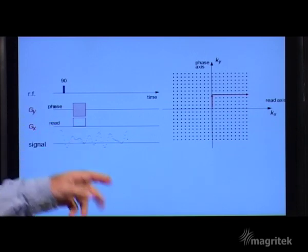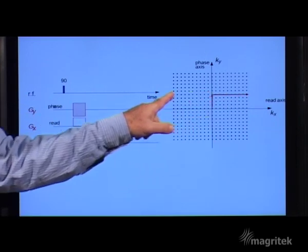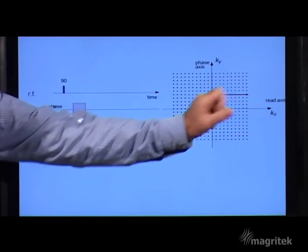The combination of these two gradients take us to a particular line and a particular position at the edge of k-space.